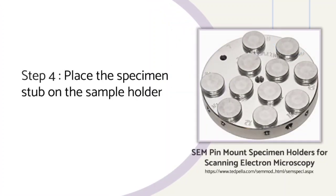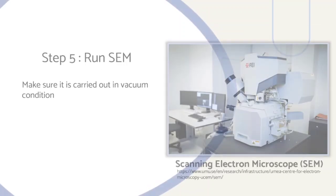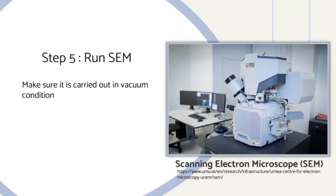Step 4: Place the specimen stub on the sample holder. Step 5: Run SEM. Make sure it is carried out in vacuum condition.